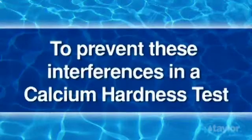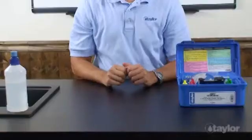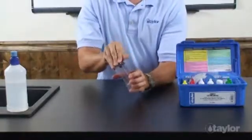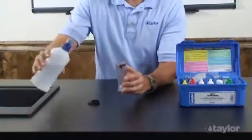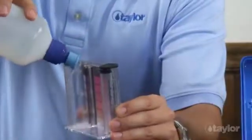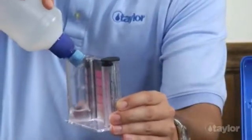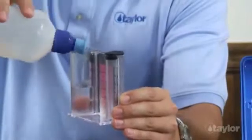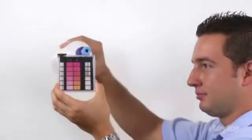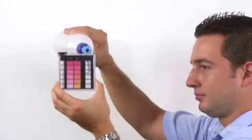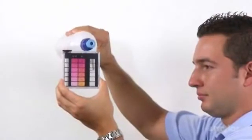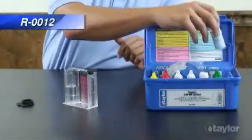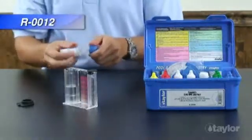To prevent these interferences on a calcium hardness test, add additional reagent 12 at the beginning of the test. Rinse and fill the large comparator tube to the 25 ml mark with the water to be tested. Add 5 or 6 drops of reagent 12 to the sample before adding the buffer and indicator.